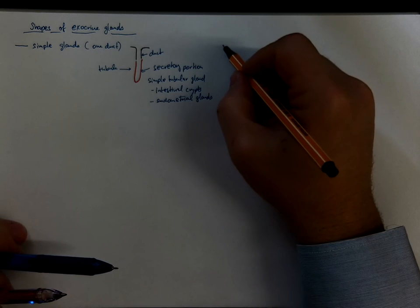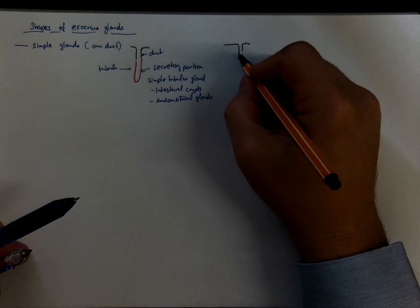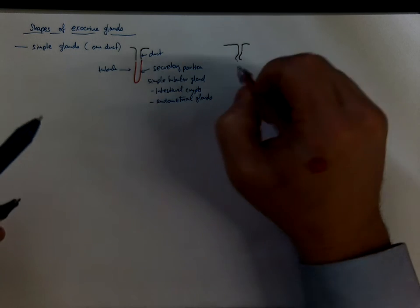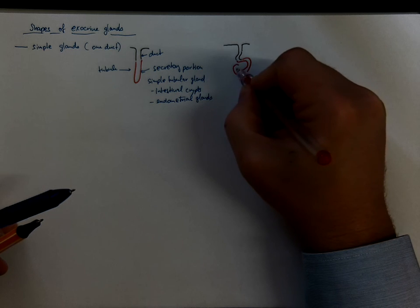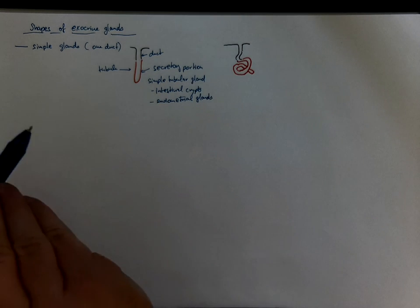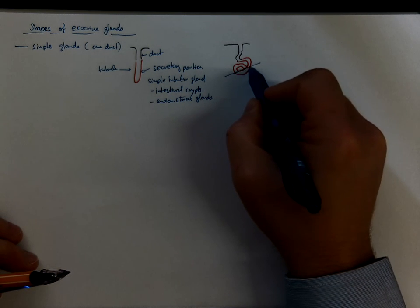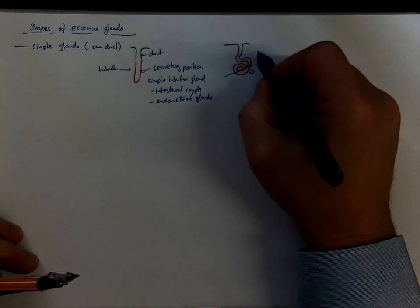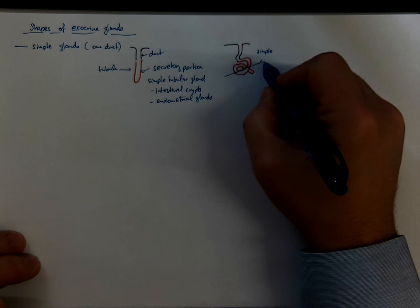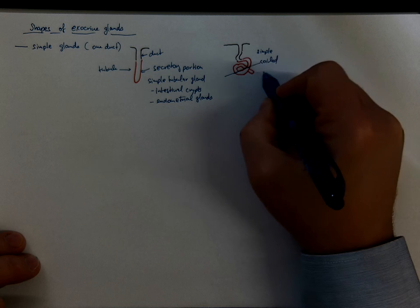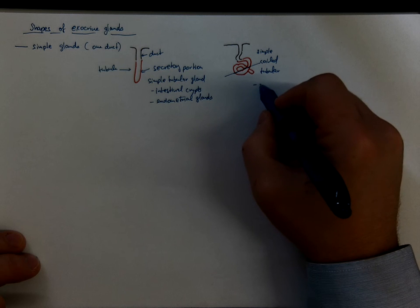The whole tubule could be also twisted and coiled. So actually when we make a histological section through it what you see is multiple profiles of various parts of the tubule. You will call that simple coiled tubular gland and that's the shape of human sweat glands.